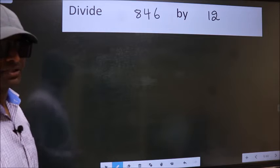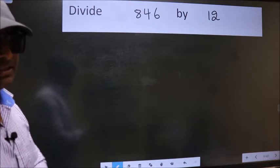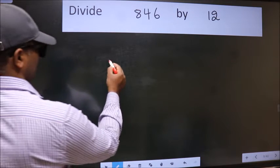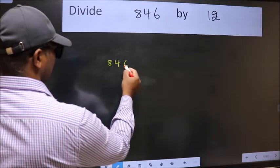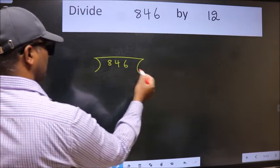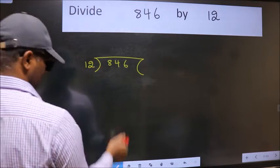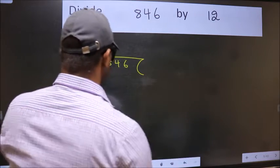But before that, we should frame it in this way: 846 here, 12 here. This is your step 1.